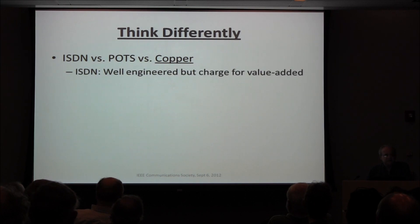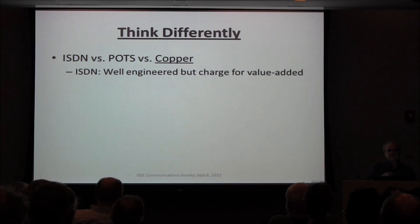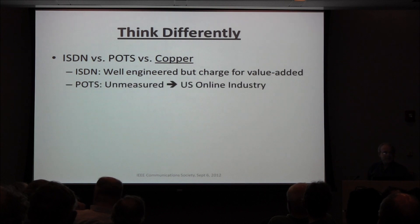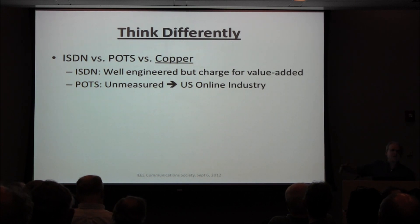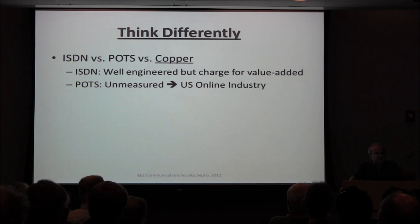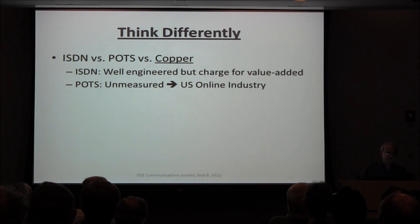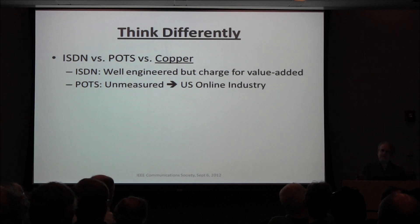ISDN was well-engineered, but they charged for the added value. The real reason they charged is it was too expensive to do billing for local calls using rotary dials, so they made it flat rate. Once you get ISDN, billing becomes cheap so you can now bill. But even with ISDN, you couldn't do video — it was designed for video, but making video work was so complicated you didn't want to promise it would work. POTS's unmeasured service drove the online industry in the way ISDN could have in the US. By the end of POTS, 56KB modems ran as fast as a single channel on ISDN — because modem designers reverse-solved the codec at the exchange and had full control over one leg of the copper.